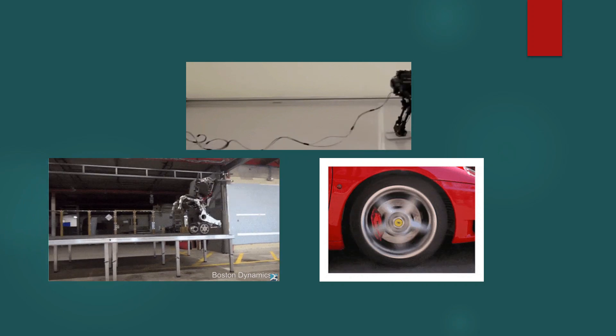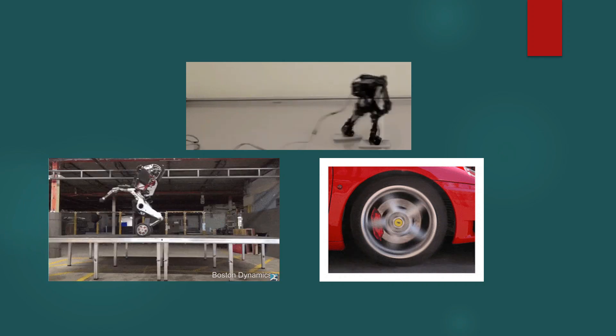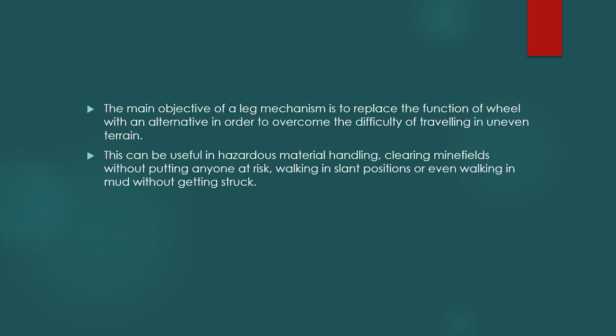Compared to a wheel, a leg mechanism is potentially better fitted to uneven terrain as it can step over obstacles. The main objective of a leg mechanism is to replace the function of wheel with an alternative in order to overcome the difficulty of traveling in uneven terrain.